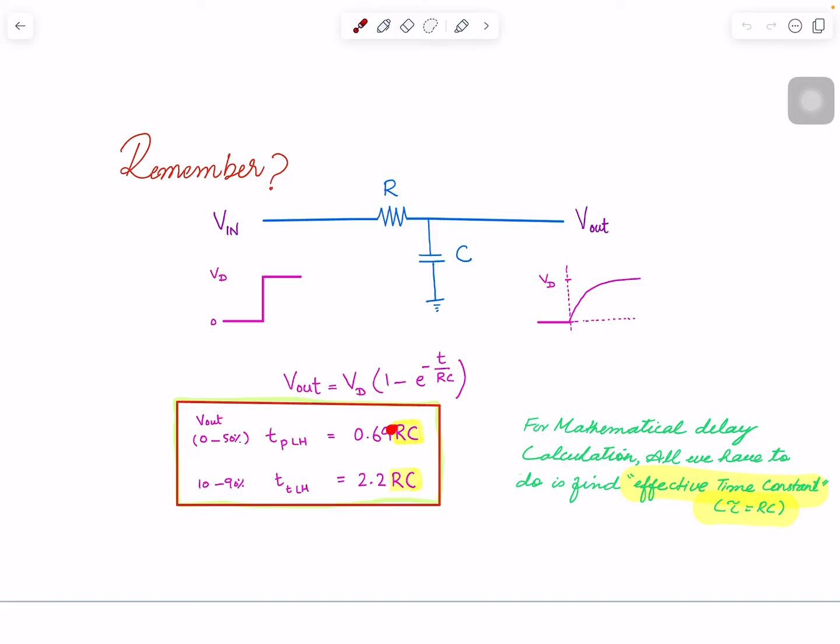Basically you put V_out equal to 0.5 VDD and solve it. The time you get is 0.69RC. The time it takes for 10% to 90%, the slew of this waveform, is 2.2 times RC.